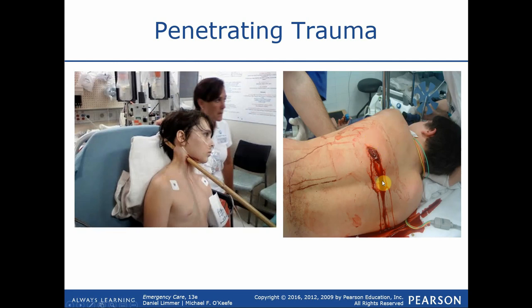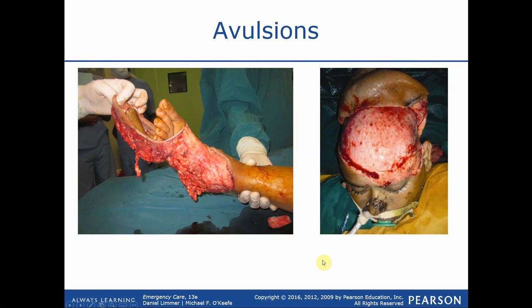With penetrating trauma such as gunshot wounds, we have the potential for additional bleeding. Something important to note: the entrance wound on a gunshot is going to be small with very little bleeding involved, but the exit wound is where we start to get large blowouts — a lot more tissue damage and a lot more bleeding.